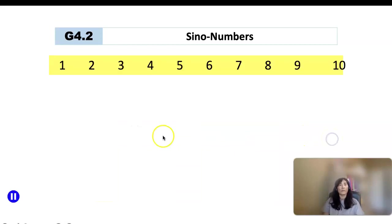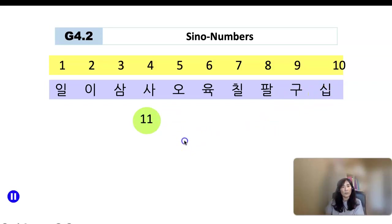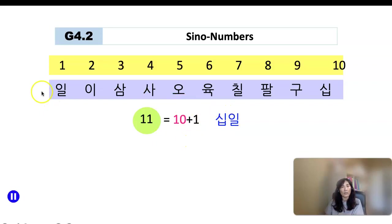Now we know how to say numbers from 1 to 10. How do you say number 11? You can analyze it as 10 plus 1. How do you say 10? 십. And then you add 1, 일. So it is 십일. Number 11 is 십일.